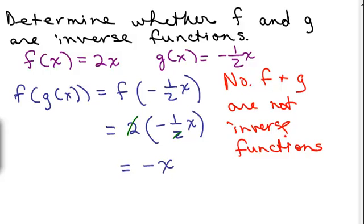What if I had said g of x was positive 1 half x? What do you think will happen here? Imagine if you put in positive 1 half x, positive 1 half x here, you would end up with x. So 2x and 1 half x do end up being inverse functions.